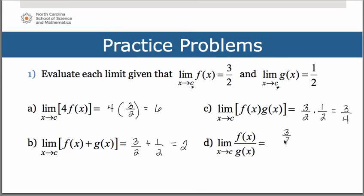And finally, if we want the limit of the quotient of the two functions as x approaches c, we will have 3 halves, which was the limit of the f of x function, divided by 1 half, which was the limit of the g of x function, and that simplifies to 3.